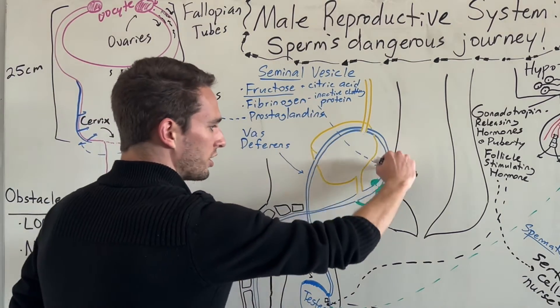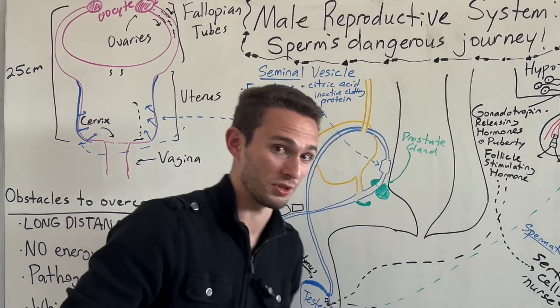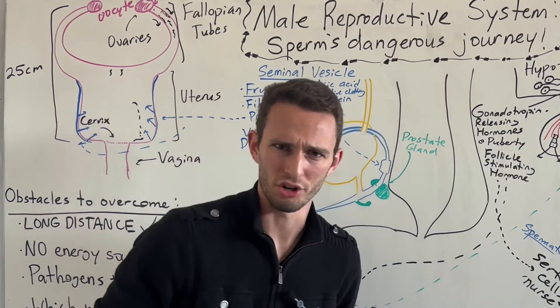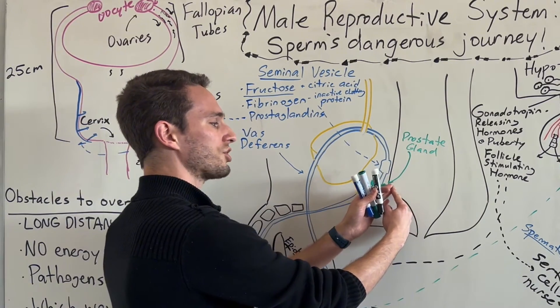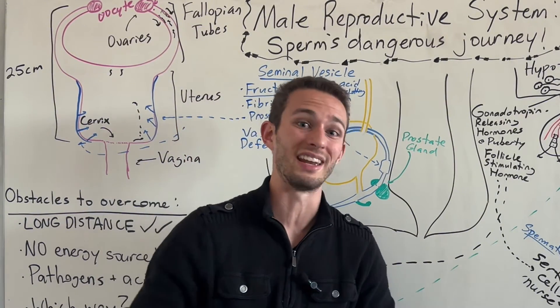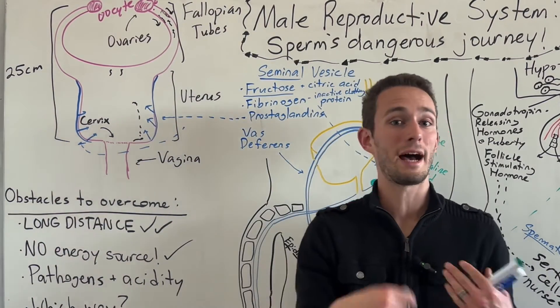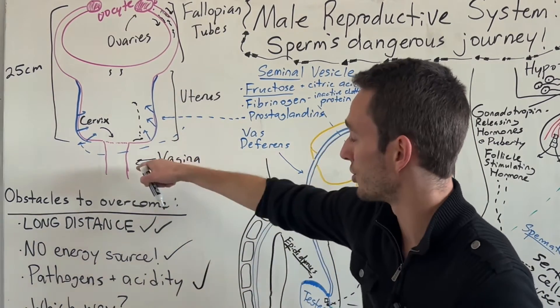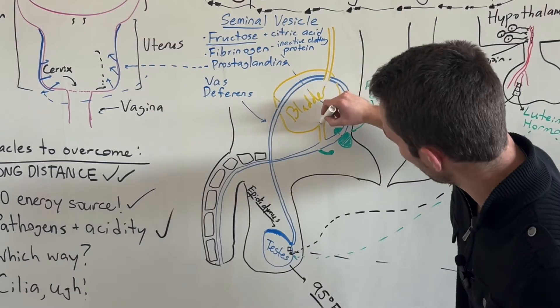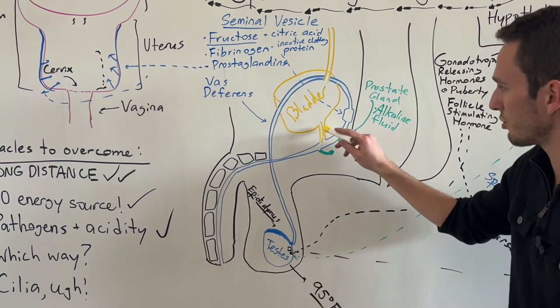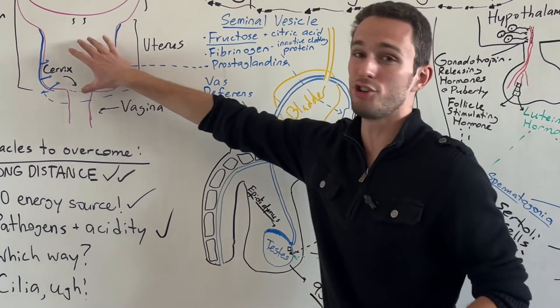Next up, we're also going to make what's called fibrinogen, which is an inactive clotting protein. Then lastly, the seminal vesicle will make prostaglandins. Prostaglandins contract smooth muscle, basically involuntary muscle in a variety of different body parts, specifically lining the uterus. So there'll be smooth muscles lining this uterus, and if the prostaglandins come into contact with them, the muscles will contract and push that direction. This helps any sperm that are down here get pulled up very rapidly by the smooth muscle contraction, helping with that long distance.